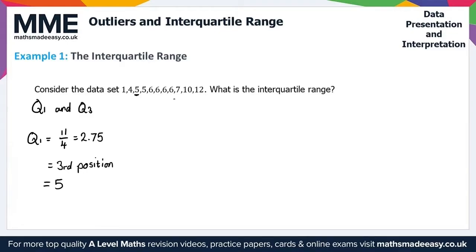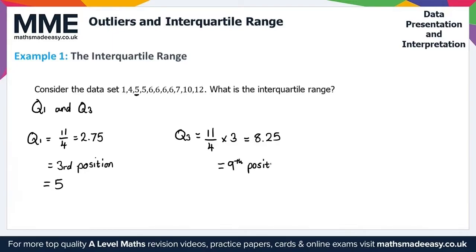Now let's calculate Q3. Q3 is equal to 11 over 4 times 3, so we do 11 divided by 4 and multiply by 3. That gives us 8.25. We always round up, so that's the 9th position. Counting from the start — third, fourth, fifth, sixth, seventh, eighth, ninth — that gives us Q3 = 7.